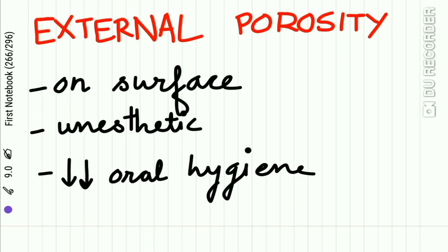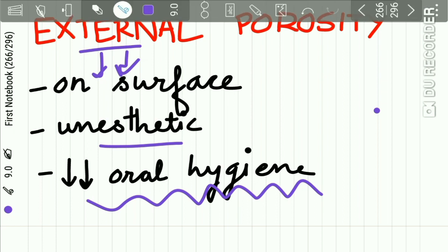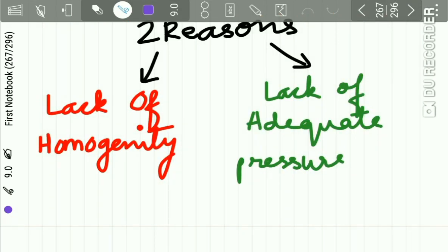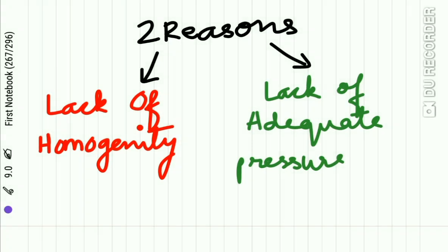External porosity, as the name indicates, is present on the surface of the denture. It makes the appearance of the denture very unaesthetic, and due to its presence there is decreased oral hygiene. External porosity occurs due to two reasons: first, lack of homogeneity of the dough, and second, lack of adequate pressure.